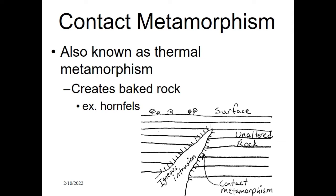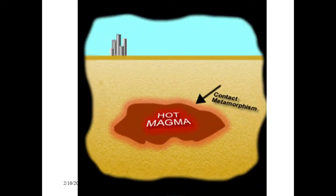Contact metamorphism is also known as thermal metamorphism. Hornfels are better examples of contact metamorphism rocks. Here you can see a diagram where hot magma is shown in deep red color, and at the contact of the pre-existing rock and this hot magma there is a zone shown in light orange color — at that light orange zone the rocks have undergone metamorphism. This kind of metamorphism where magmatic intrusion brings about the metamorphism is known as contact metamorphism.